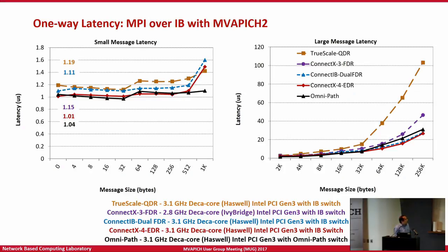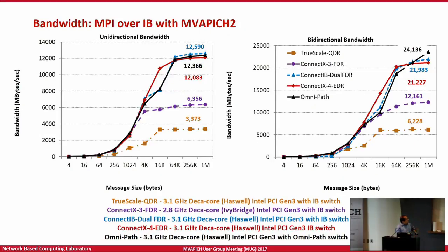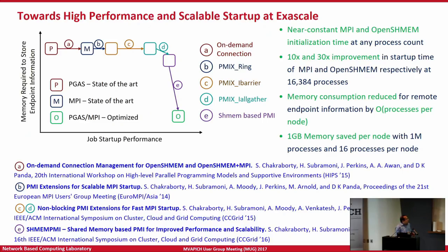These are a snapshot of performance numbers across different adapters and platforms. On the left-hand side is latency — half round-trip — and we are hovering around one microsecond for MPI node-to-node latency. For large messages, EDR gives the best performance due to higher bandwidth. For unidirectional bandwidth, the technologies QDR, FDR, EDR, and OmniPath are at around 12.5 gigabytes per second, which is 100 gigabits per second node-to-node. Bidirectionally we can achieve around 200 gigabits per second.